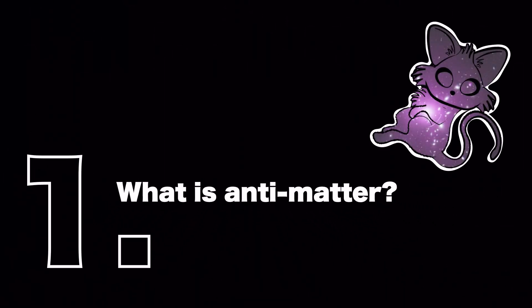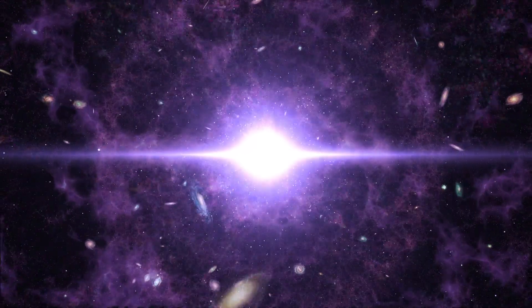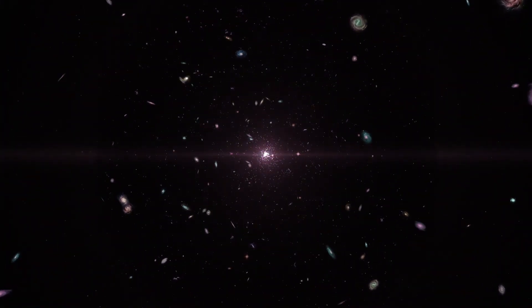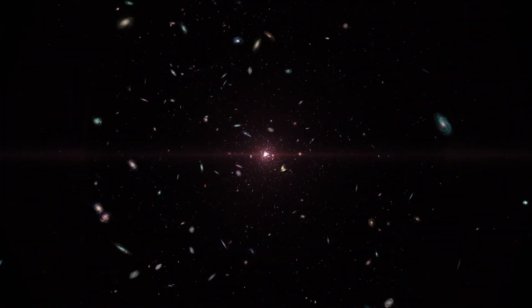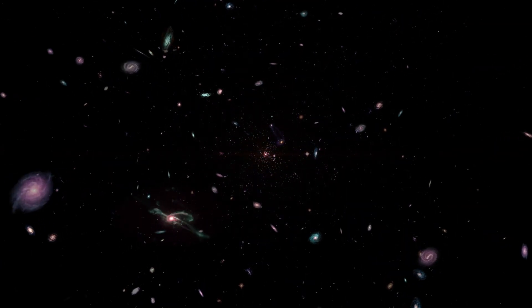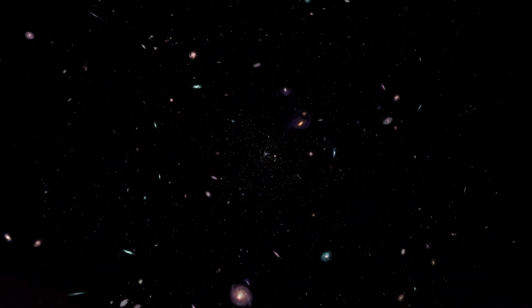Our universe is huge, but despite this, there is one thing that we know for certain: it's not empty. Once it was hot and dense and packed with matter, which would eventually grow into the stars and galaxies that we see today. Matter is everywhere. Theory tells us that in the universe, we should expect all particles to have a mirror image — that matter should come hand in hand with antimatter.